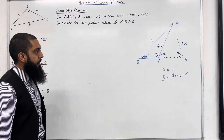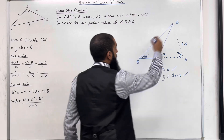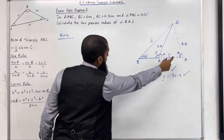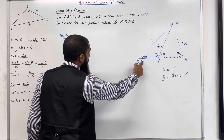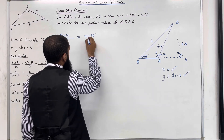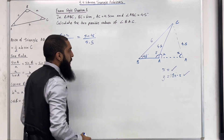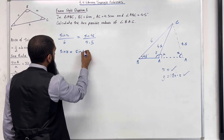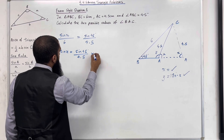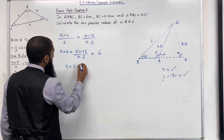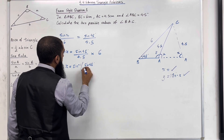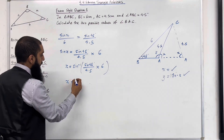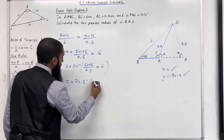Let's first start by working out X. To work out X, consider the larger triangle ABC. Using the sine rule: sin X divided by 6 equals sin 45 divided by 4.5. Rearranging to make X the subject: sin X equals sin 45 divided by 4.5, multiplied by 6. So X equals sin inverse of (sin 45 divided by 4.5, multiplied by 6). Putting this into the calculator gives 70.5 degrees to three significant figures.